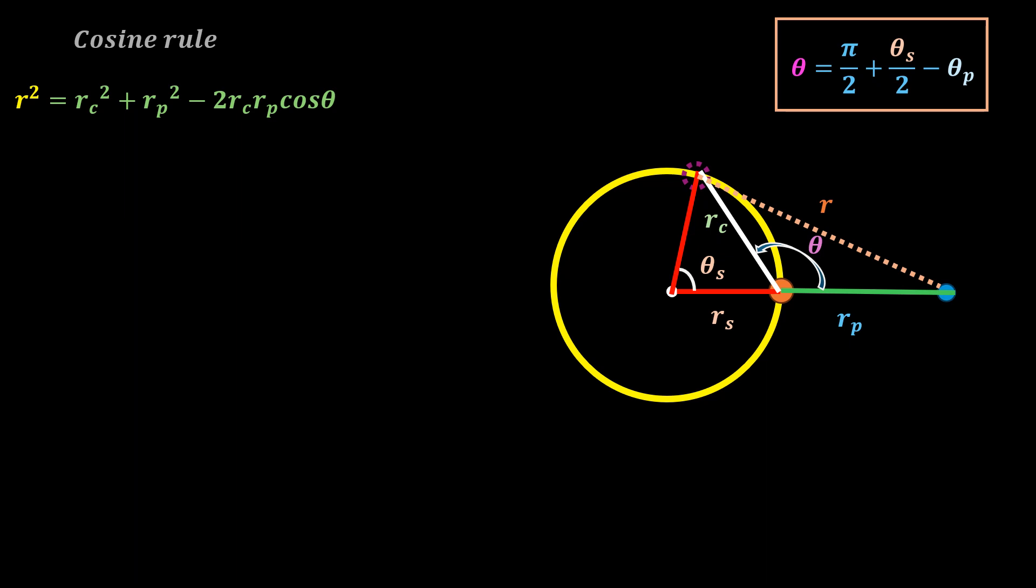We can write rc as a function of rs, which is a constant, using the chord equation as follows. Subbing that and this expression for theta in the above green equation yields this.